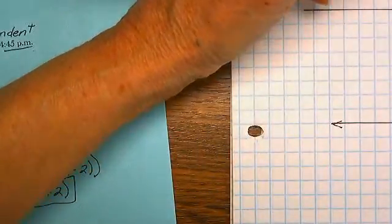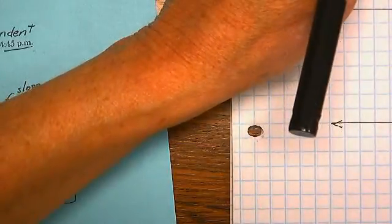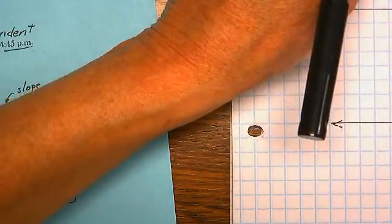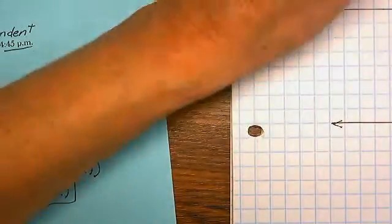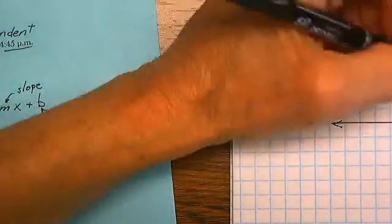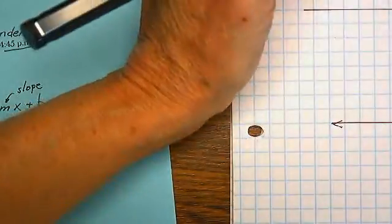Undefined slope is a vertical line. We've learned that. Vertical line.